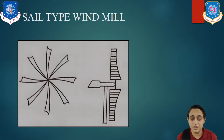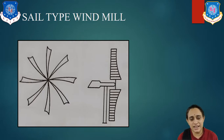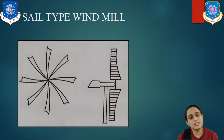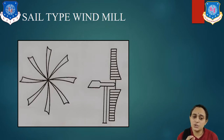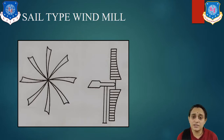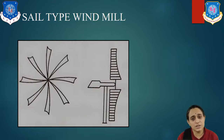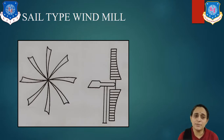It can be used for both water pumping and power generation purposes. Advantages: it is simple and light in construction because we use wooden sticks, and it is easy to install and maintain. The main disadvantage is that because we are using polymer and nylon material, the stability and reliability will be lower compared to other types.